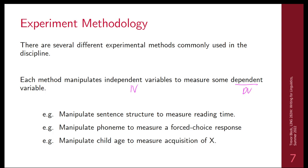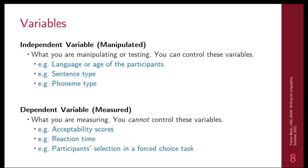For example, you're manipulating sentence structure to measure reading time. Maybe you're manipulating gender groups in order to measure some aspect of language. Some examples of independent variables are things you can control, like the languages being studied, the languages of the participants, or the ages of participants — such as 18 to 24 or 24 to 36 age groups.